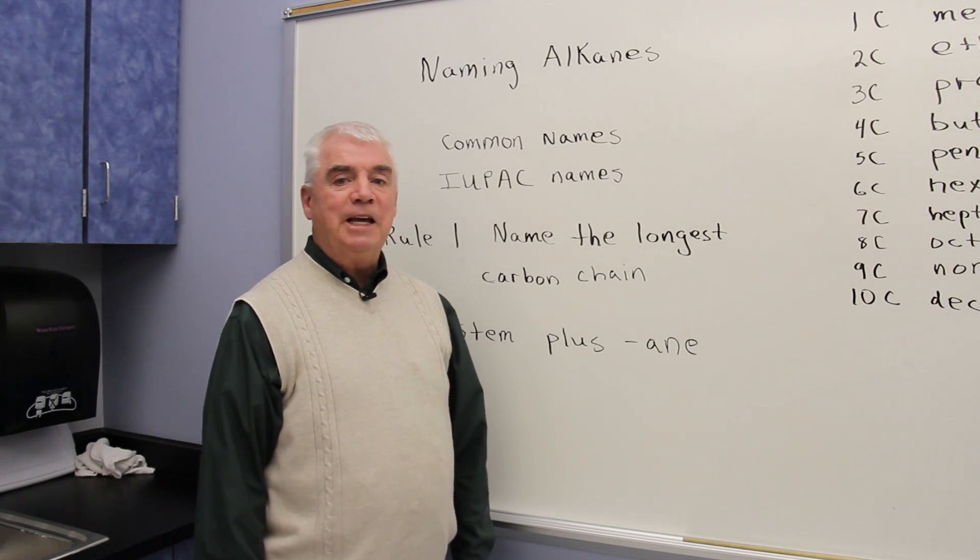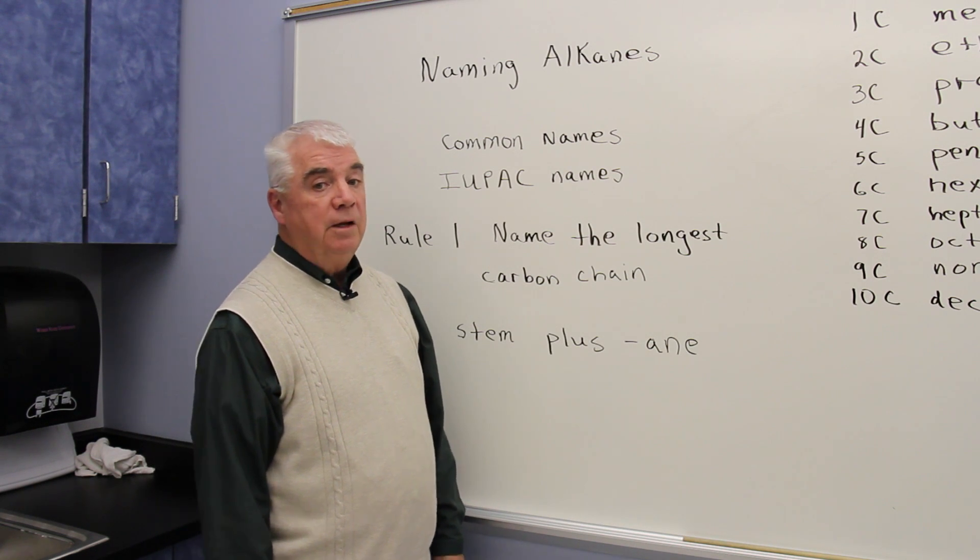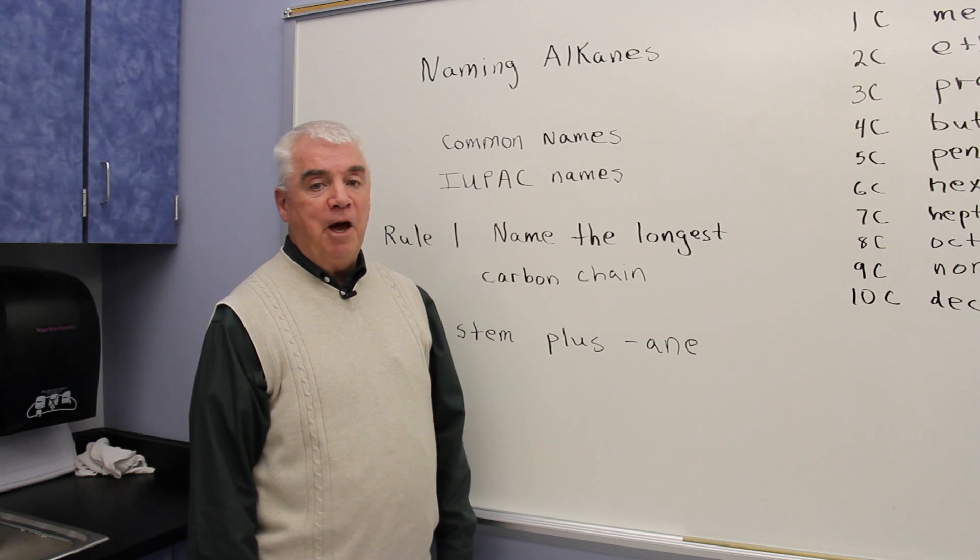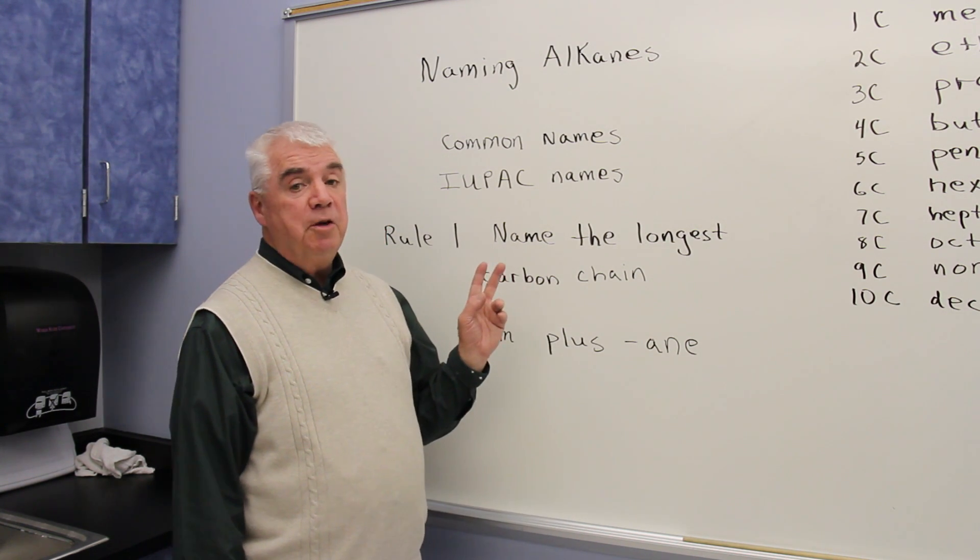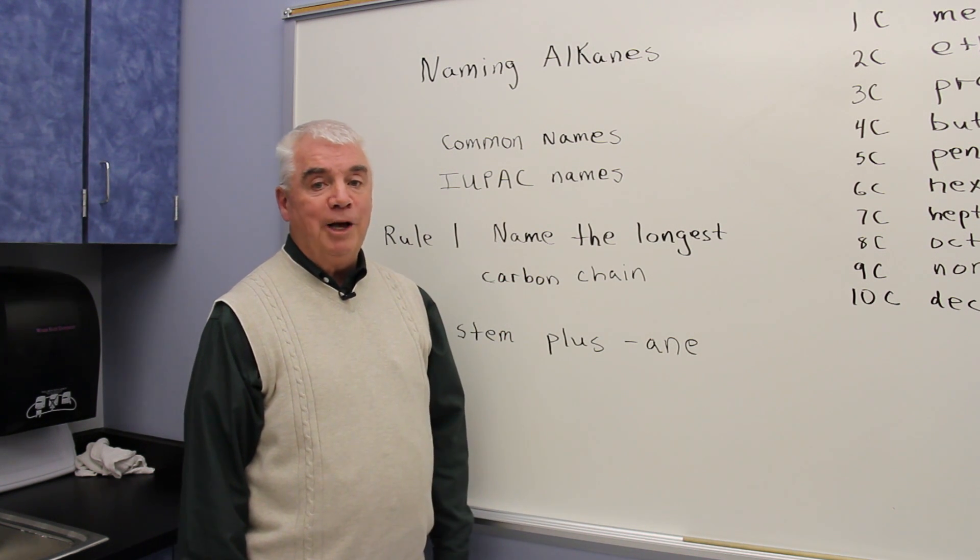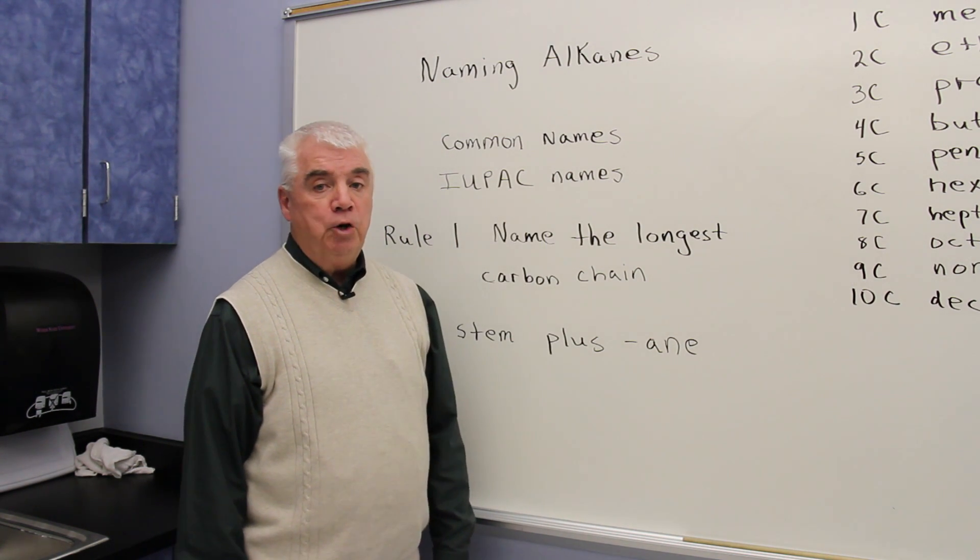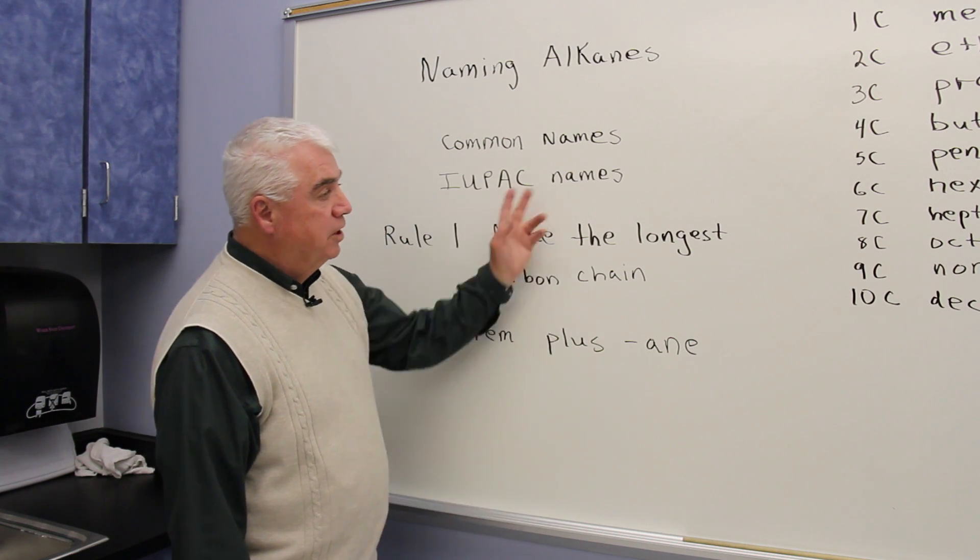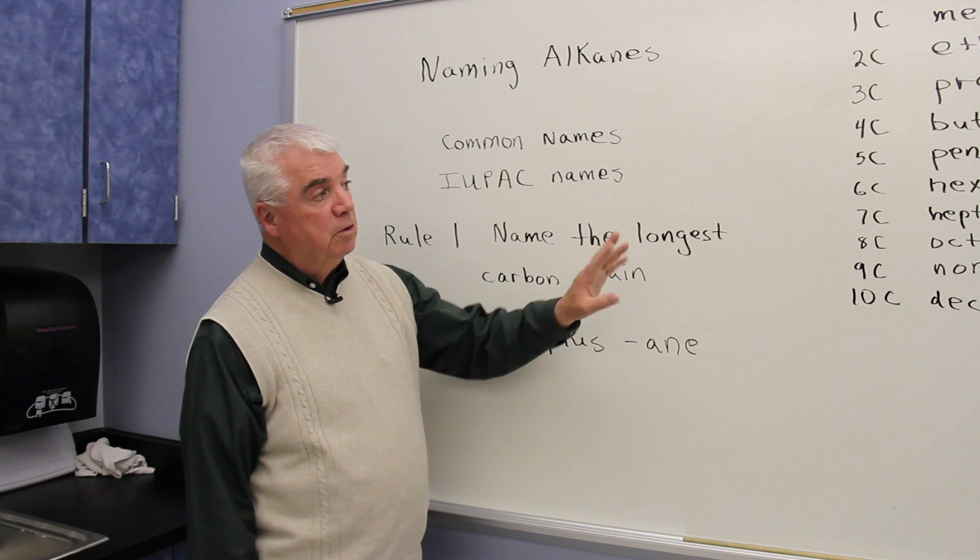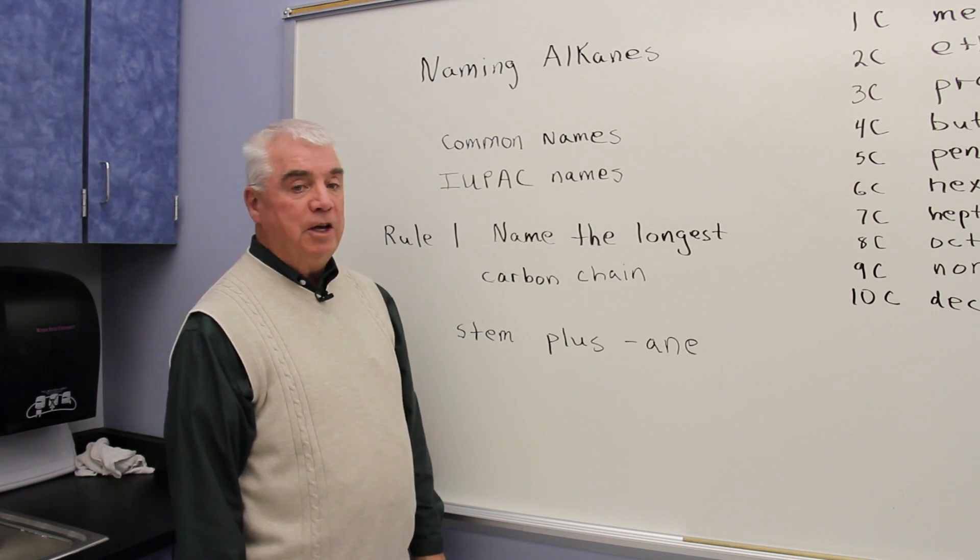Naming alkanes. As organic compounds were discovered, they were given common names or trivial names. Soon they realized, however, that there were going to be hundreds and thousands of organic compounds, and they knew that they'd need a systematic method of naming those. So the International Union of Pure and Applied Chemists came together and came up with what we call IUPAC names. That's a skill that we'd like you to have, to be able to name organic compounds, especially the alkanes in this chapter, using the IUPAC system.